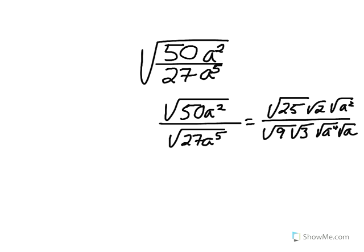When we do this and try to reduce the radicals in the numerator, we get the square root of 25 times the square root of 2 times the square root of a². In the denominator, we get the square root of 9 times the square root of 3 times the square root of a⁴ times the square root of a.